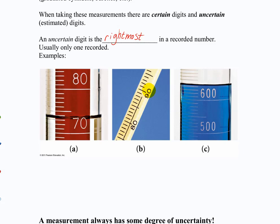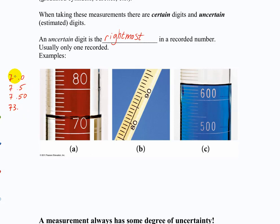Students suggest 74.0 and 73.5. Let's write some of these down and talk about what seems most reasonable. We had 75.0, 74.5, 74.0, 73.5, and 73 as suggestions.